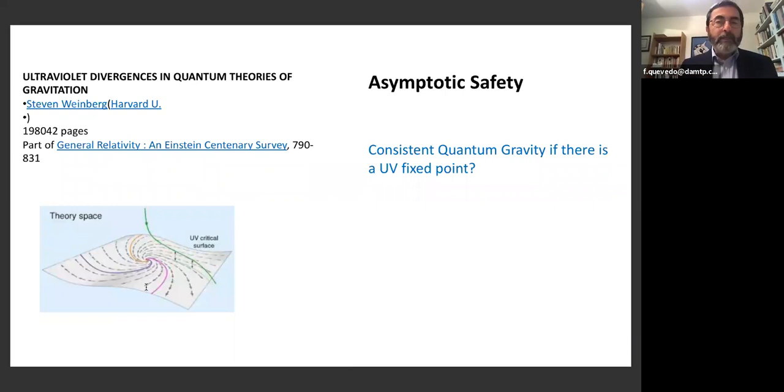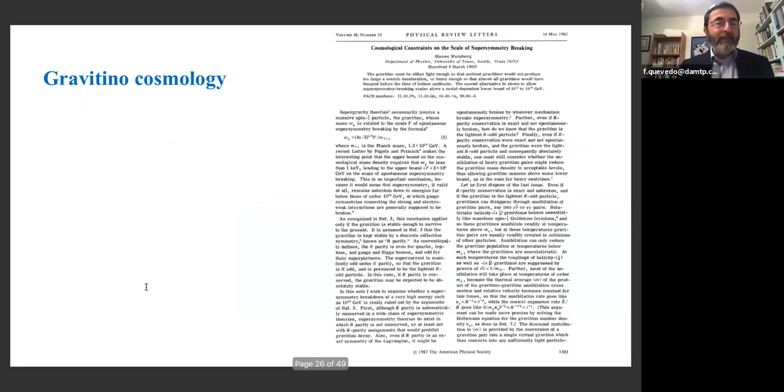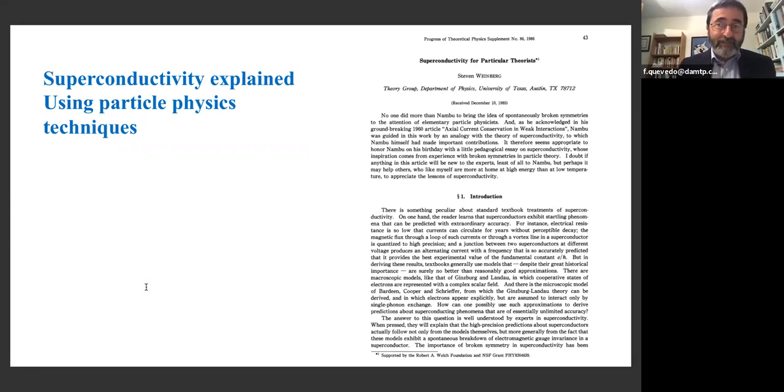Let me move quickly. In the 1980s, he had one of the few proposals for making consistent quantum theory of gravity by what's called asymptotic safety. The idea is that interactions change with energy, but at some point there may be a fixed point on the renormalization group, and if there is this fixed point, then gravity can be consistent. People are still playing with this idea. He moved to supersymmetry in the 1980s, gravitino cosmology, supergravity. I remember very well because that's where I started being his student. He had a beautiful paper about understanding superconductivity from particle physics.